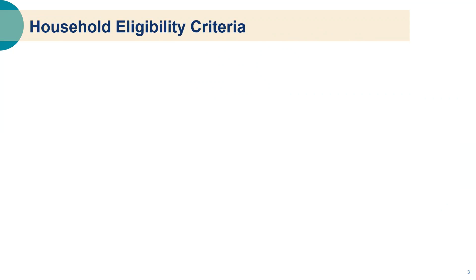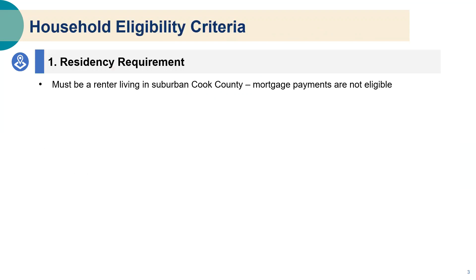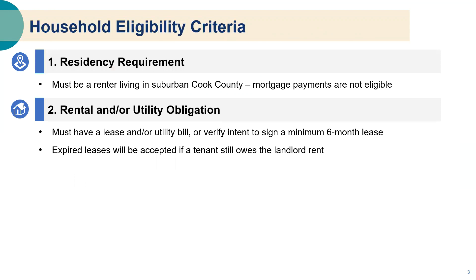To be eligible for Emergency Rental and Utility Assistance you must demonstrate the following criteria. First, you must be a resident and a renter living in suburban Cook County, Illinois. Second, you must be obligated to pay rent and or utility bills on a dwelling at your suburban Cook County address. This can be demonstrated with a lease or utility bill or the intent to sign a lease for a minimum of six months. Expired leases will be accepted if a tenant still owes the landlord rent.